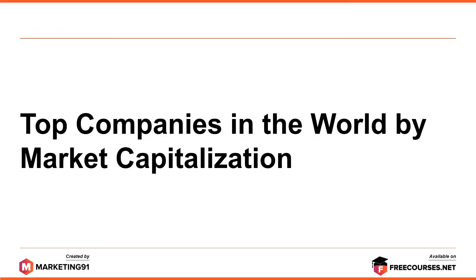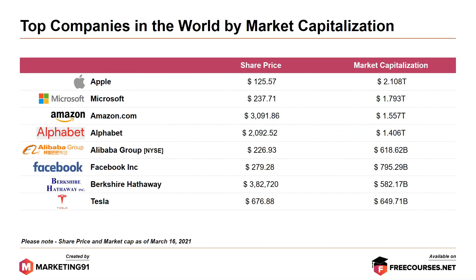Finally, the top companies in the world by market capitalization. As of March 16, 2021, at the top of the list is Apple with a share price of $125.57 but a market cap of over $2 trillion — the only company to be in that category.